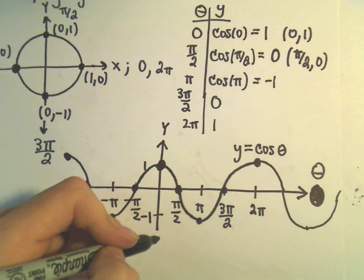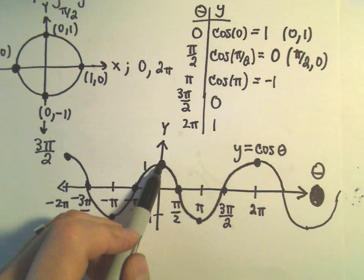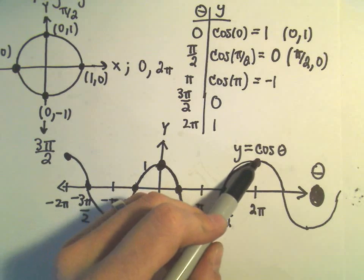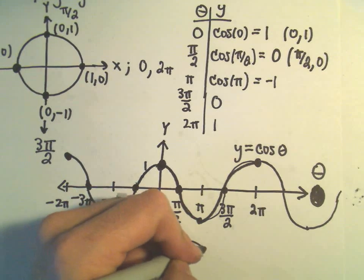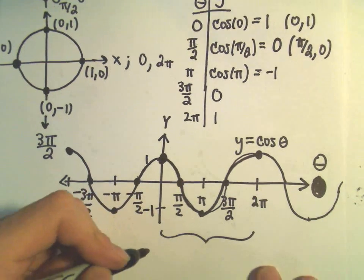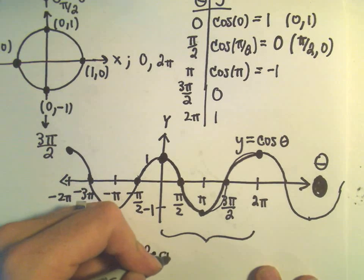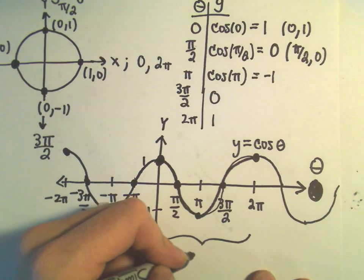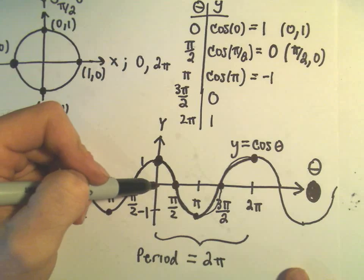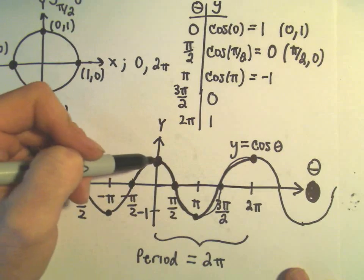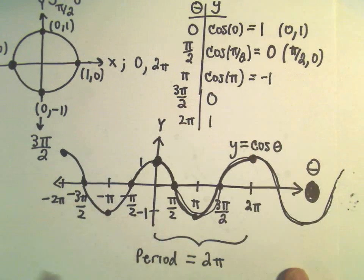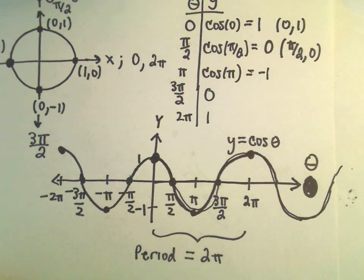A couple other things, some terminology. Notice when we started, when we plugged in 0, we got 1, and then we went down and back up, and then we went back to where we started. Notice this length that it takes to repeat itself. That's what's known as the period. So we would say that the graph of y equals cosine theta has a period equal to 2π. Because once you travel along the x-axis a distance of 2π, you're basically just back where you started. If you go another 2π, you're going to be back where you started.